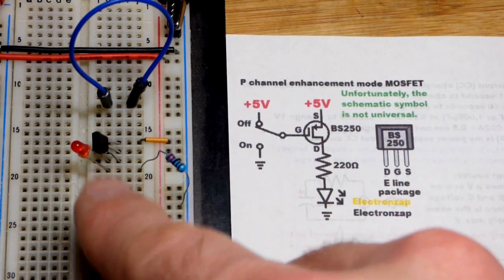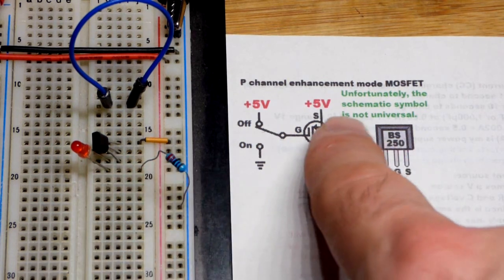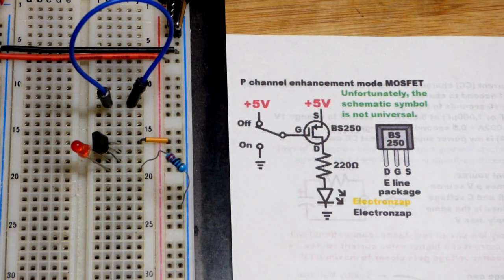So at the bottom we have the drain, as you can see there. Middle pin is the gate, and then the top pin to the positive supply is the source.